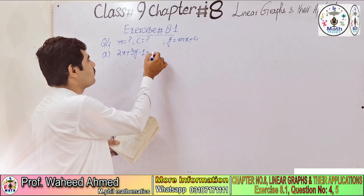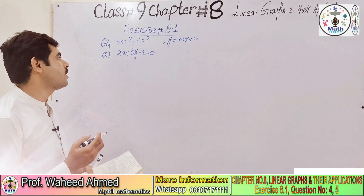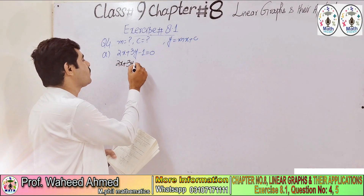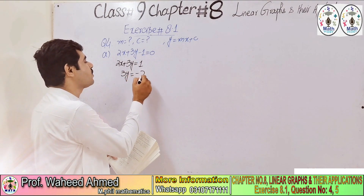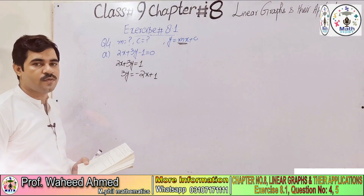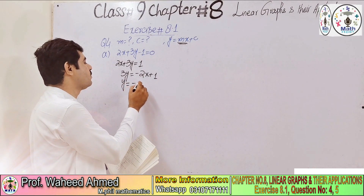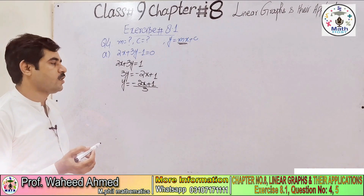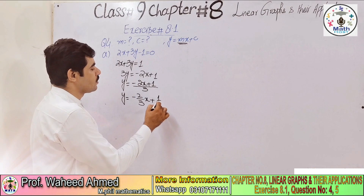Part A: 3y - 1 - 1 is equal to 0. First of all, we will make y the subject. Minus 1 becomes plus 1. So 2x + 3y = 1. Moving 2x to the other side: 3y = -2x + 1. Therefore y = (-2x + 1) divided by 3, which gives y = (-2/3)x + 1/3.